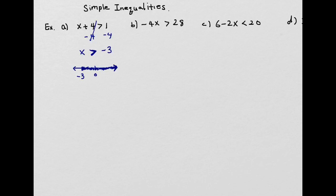Because it's greater than — not greater than or equal to — there's no equal sign, so we don't include negative 3. You can use either a parenthesis or an open circle. With a graph like that, your interval notation will use a parenthesis on negative 3.